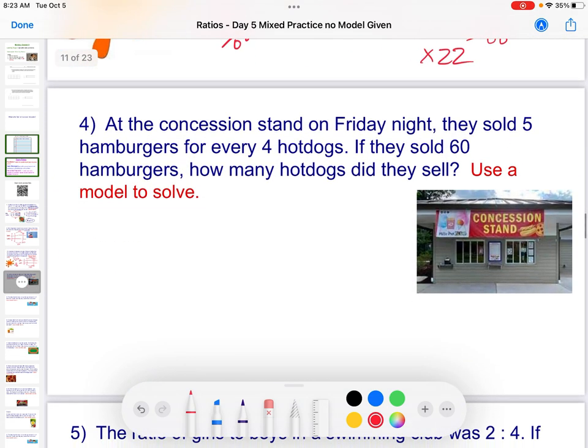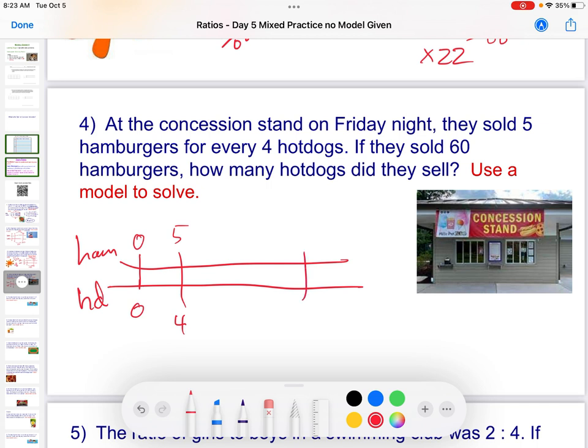At the concession stand on Friday night, they sold 5 hamburgers for every hot dog. They sold 5 hamburgers for every 4 hot dogs. If they sold 60 hamburgers, how do I jump up to 60? Well, I'm going to multiply by 12. If I multiply by 12, I'm going to multiply by 12 here for 48 hot dogs. 48 hot dogs.